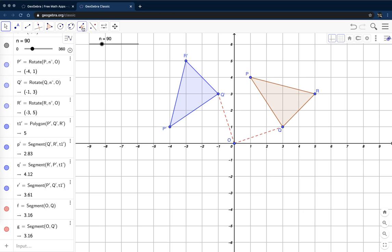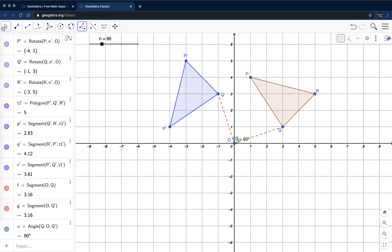And over here is the angle measure tool. So from Q to O to Q prime, we see we have a right angle.